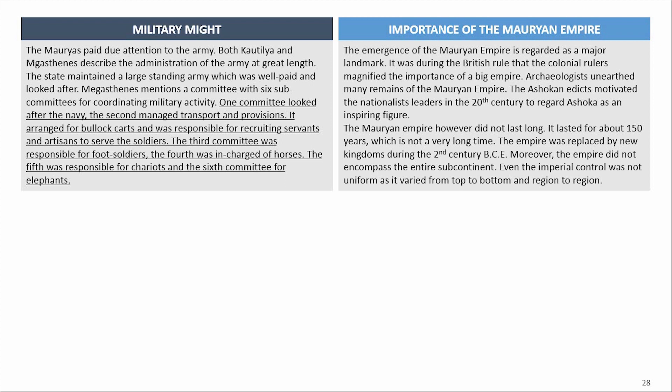The emergence of the Mauryan Empire is regarded as a major landmark. It was during British rule that colonial rulers magnified the importance of a big empire, and archaeologists unearthed many remains of the Mauryan Empire. The Ashokan edicts motivated national leaders in the 20th century to regard Ashoka as an inspiring figure. However, the Mauryan Empire did not last long — it lasted for about 150 years. The empire was replaced by new kingdoms during the 2nd century BCE, and moreover, it did not encompass the entire subcontinent, with imperial control varying from region to region.